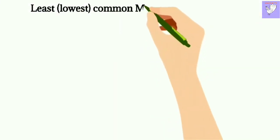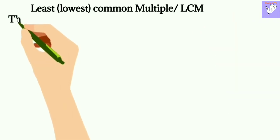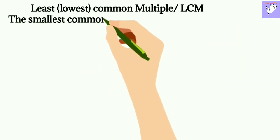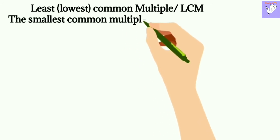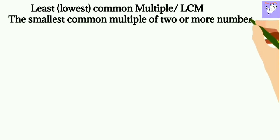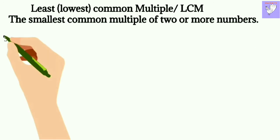The least or the lowest common multiple or the LCM. The smallest common multiple of two or more numbers is called the least common multiple. Let's find out how to find the least common multiple.